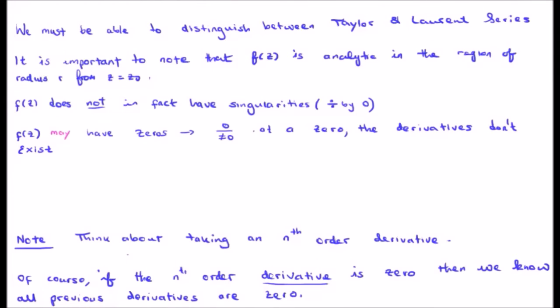We must be able to distinguish between Taylor and Laurent series. It's important to note that f is analytic in the region of radius r from the pole z equals z zero. f does not have singularities, for example dividing by zero. But f may have zeros, which might be zero over something non-zero. At a zero, of course, the derivatives don't exist.